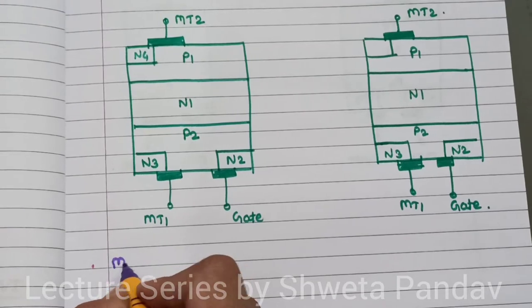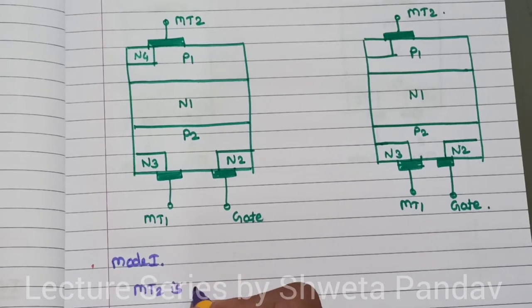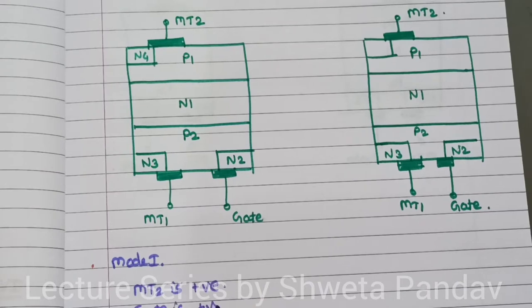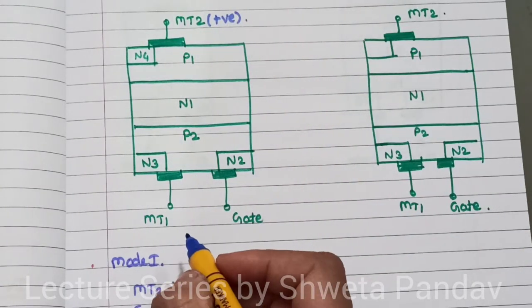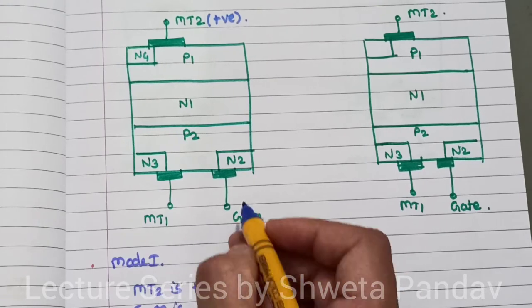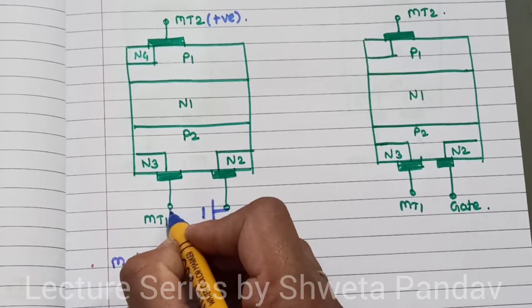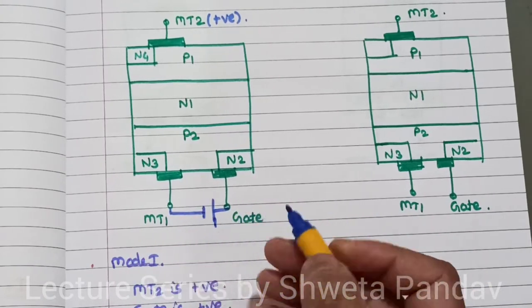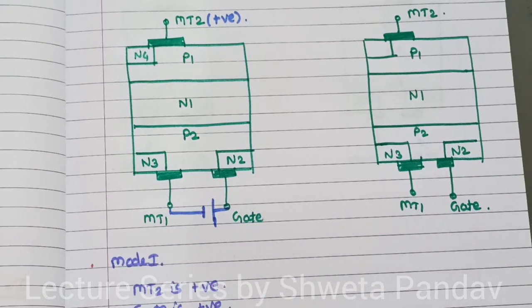In Mode 1 of the triac, the MT2 terminal is positive and the gate terminal is positive. We are connecting the MT2 terminal to the positive terminal of the battery, the gate is connected to the positive battery supply, and the negative battery supply is connected to the MT1 terminal. The direction of flow of gate current is towards this side.